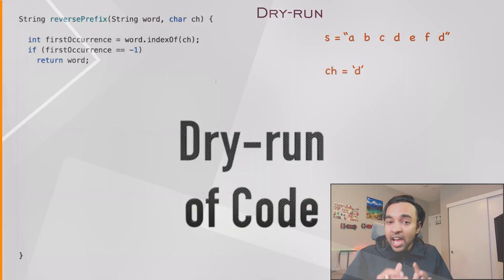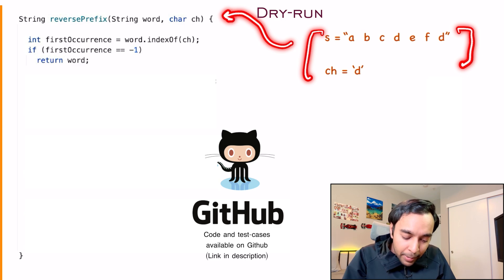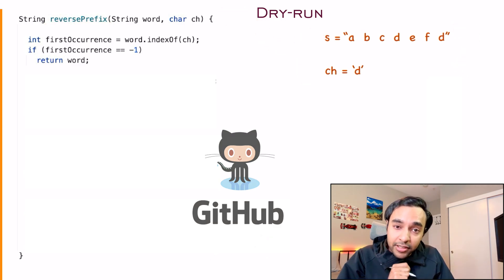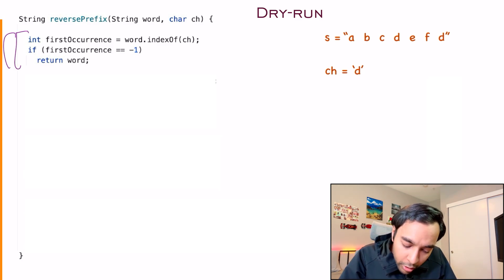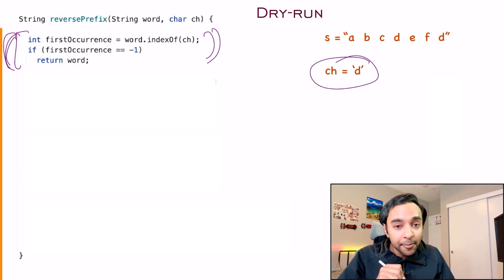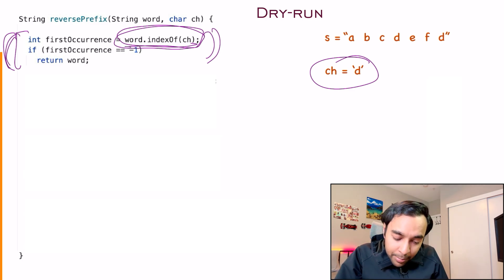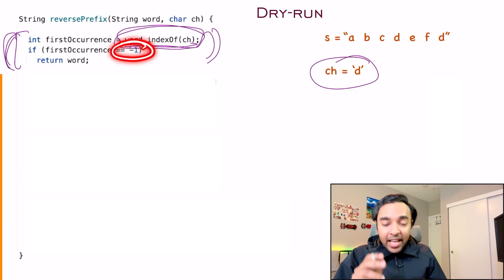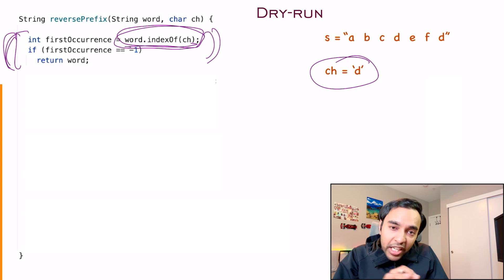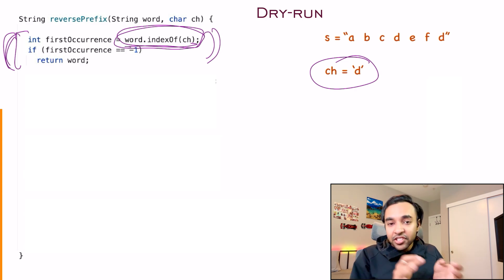On the left side of your screen, you will have the complete code to implement this solution. And on the right, once again, I have my sample test case that is passed in as an input parameter to the function reverse prefix. Now, if you remember, what was the first thing that we did? First of all, we found the first occurrence of the given character. Now, the character is D. So I do a word.indexOf this particular character. If I get a value, that means this particular character does exist in my string. If not, I will get a minus one. And if that is the case, you don't have to make any modifications and you simply return the word. So this is how basically you are handling the edge case.